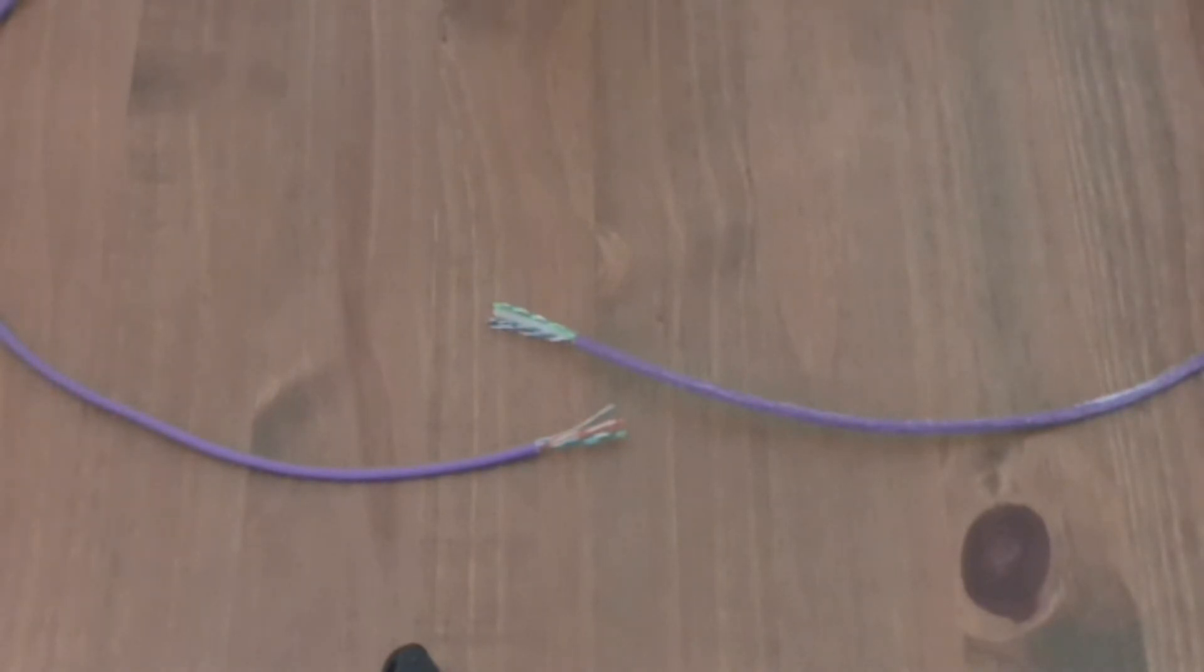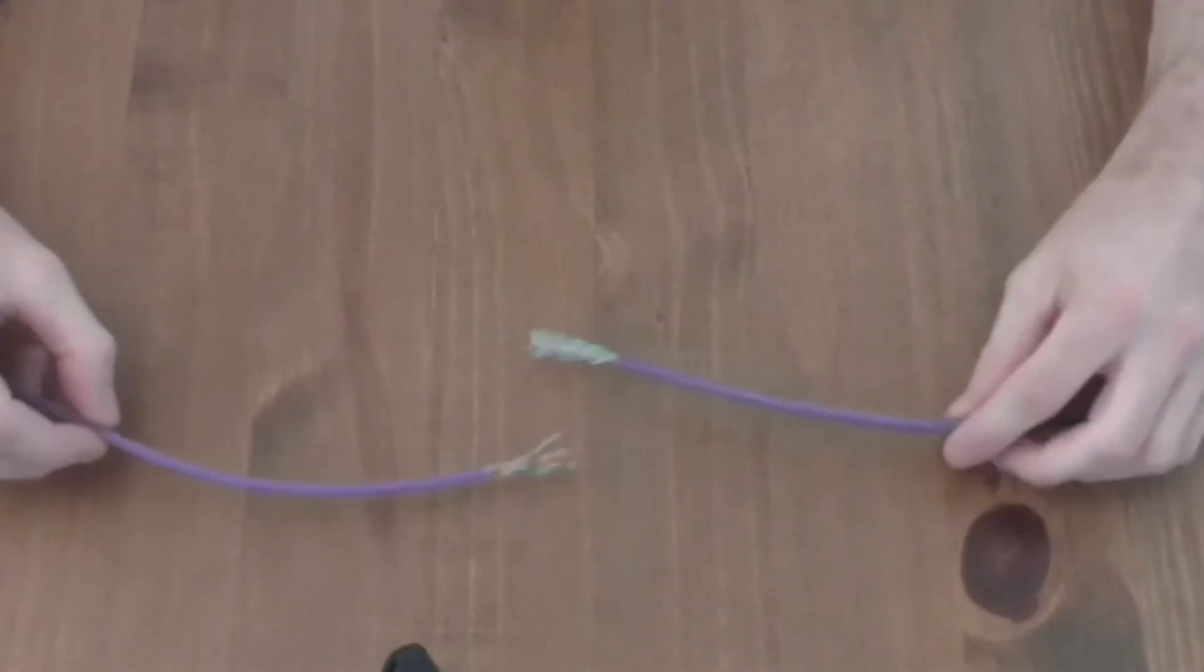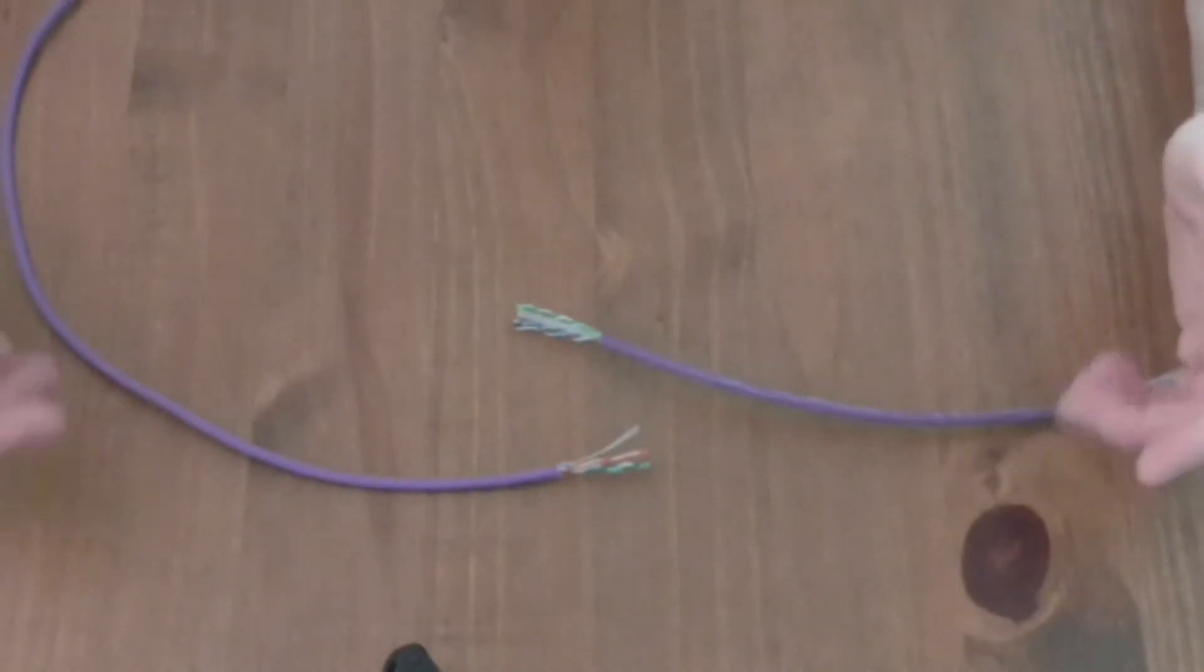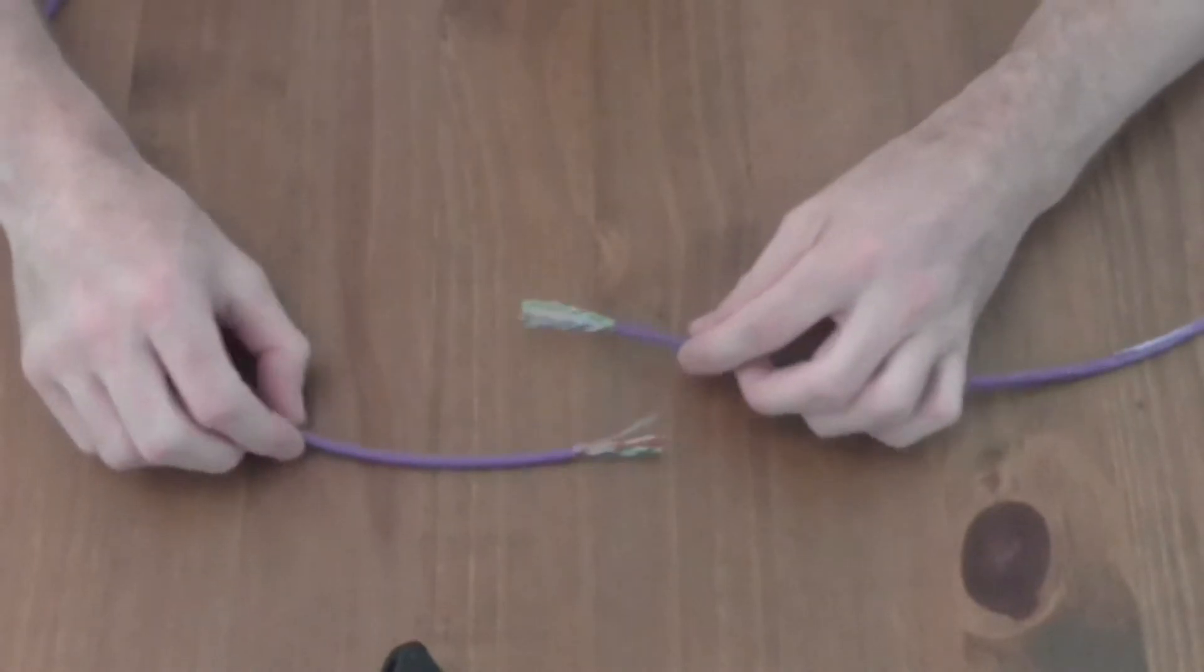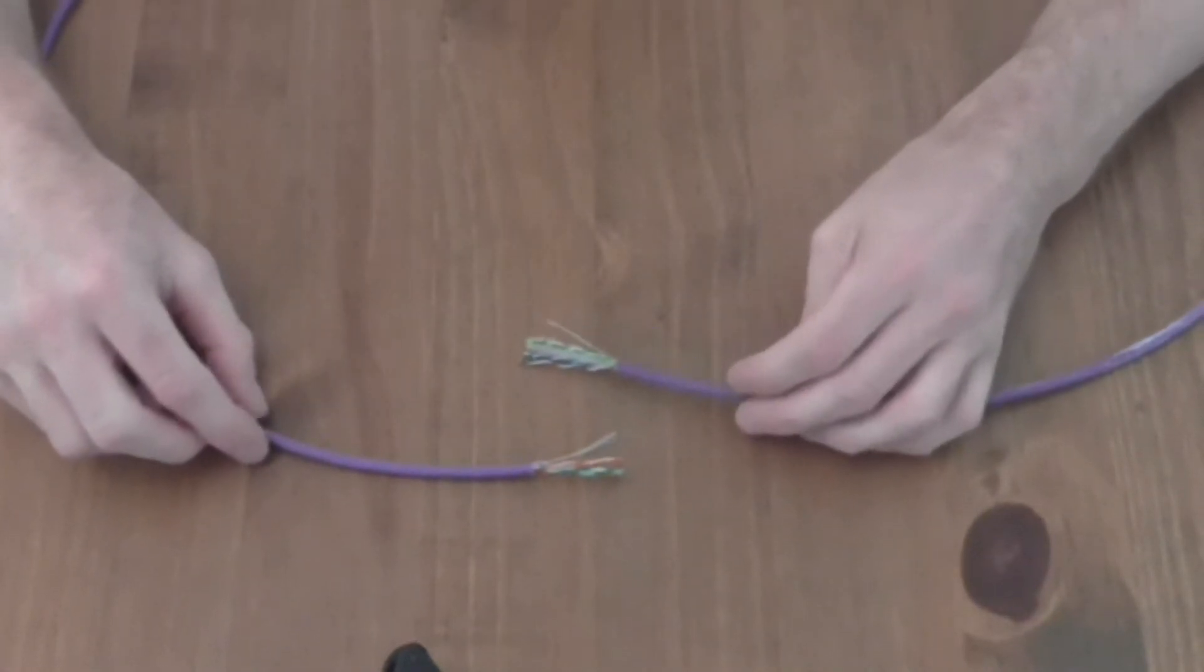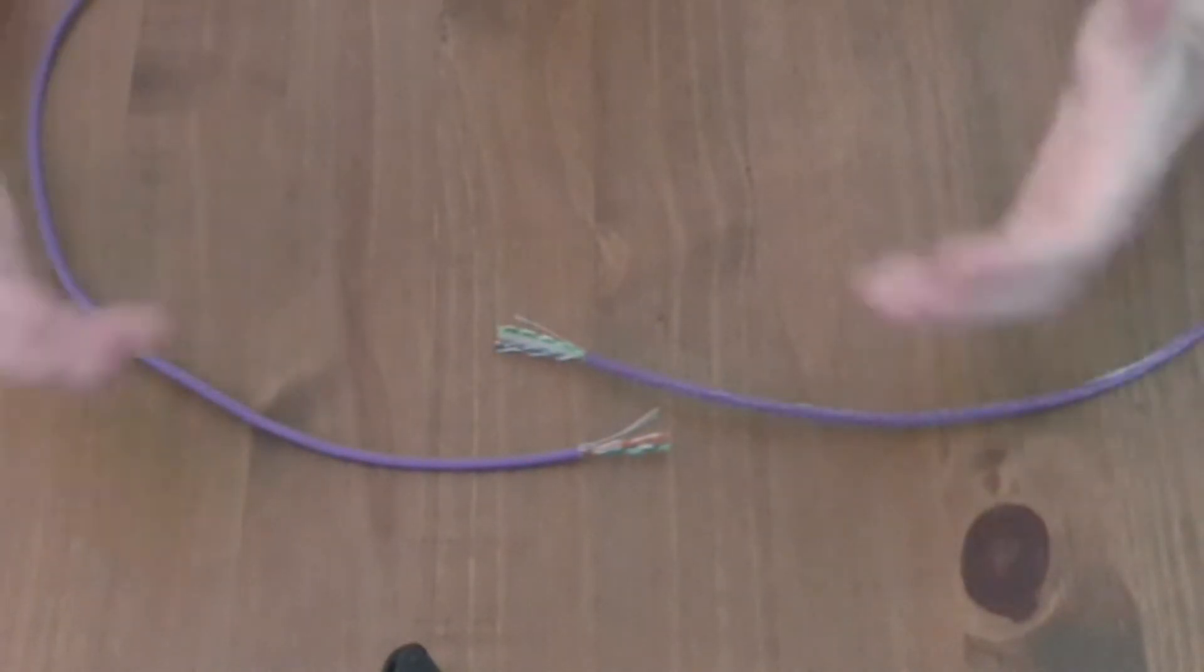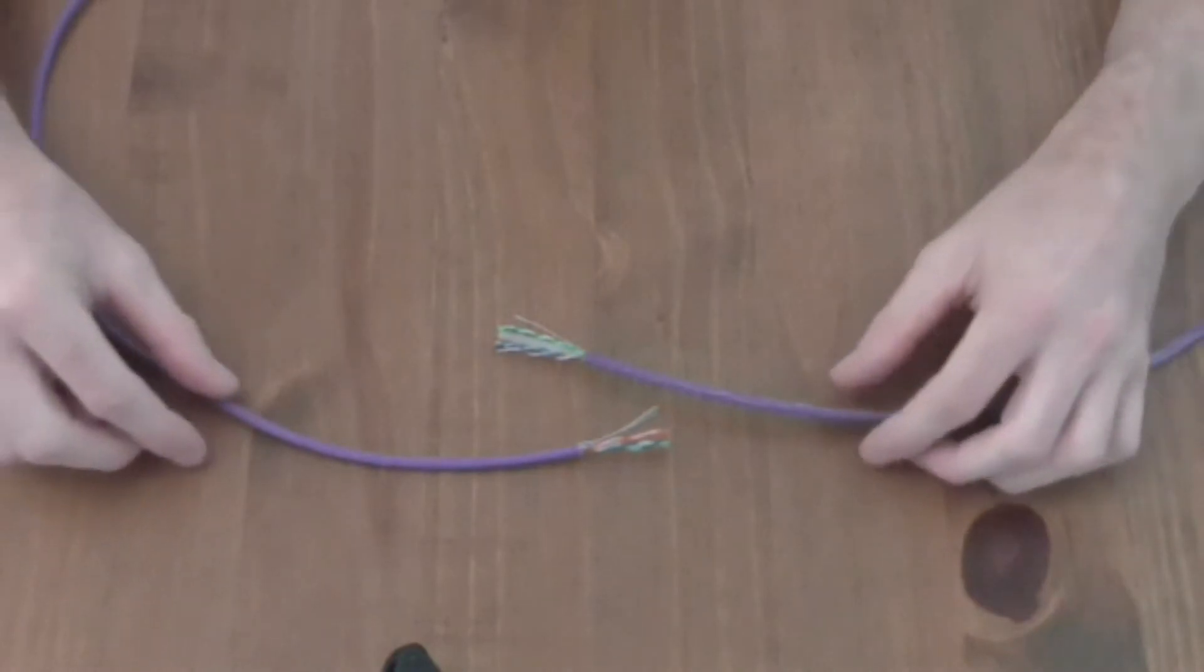Just from the offset the cables obviously look pretty similar. They've both got the same outer sheathing, same color. These are both low smoke zero halogen cables which basically means in the event of a fire they don't produce as much toxic smoke as other cables might. They're purple to highlight the fact they're internal cables.